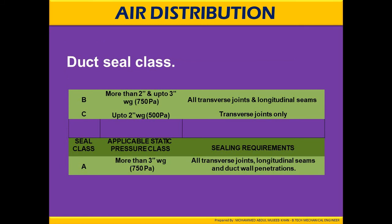Duct seal classes: Seal Class A covers more than 2 inches up to 3 inches of water gauge (750 Pascals) — all transverse joints, longitudinal joint seams, and wall penetrations. Seal Class B covers up to 2 inches of water gauge (500 Pascals) — transverse joints only. Seal Class C covers up to 0.5 inches of water gauge (125 Pascals) — all transverse joints and wall penetrations.